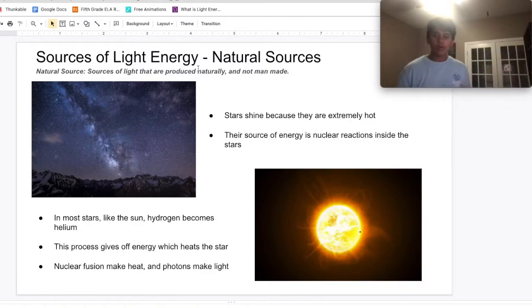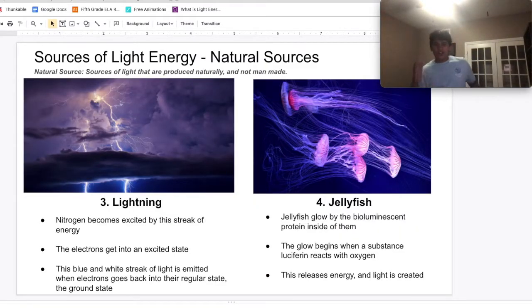The core of the sun is super hot, and nuclear fusion comes along. Hydrogen becomes helium, and nuclear fusion makes heat. Light is emitted when electrons move from the excited state to the ground state.